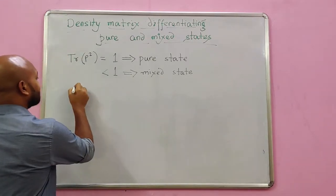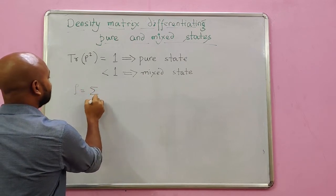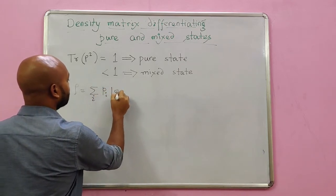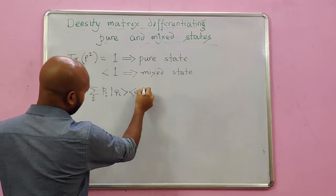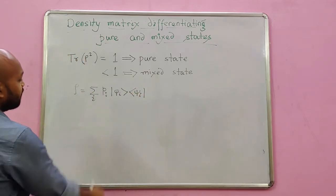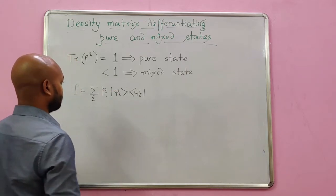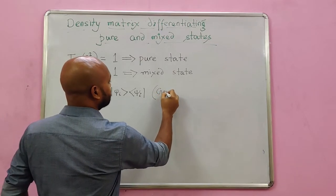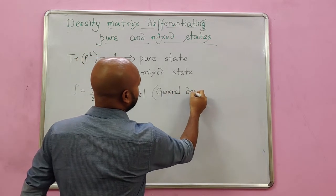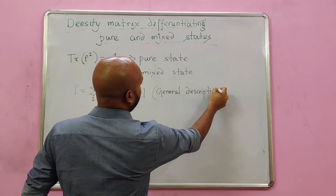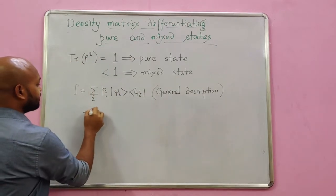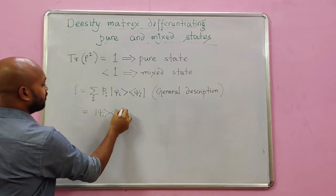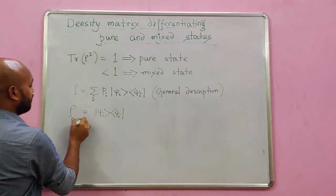Let's first recall that rho, a user density matrix, is given by the following formula: it's equal to summation over i, pi, psi i, psi i. If there is a single component, that means it's a pure state. Single component means there is only one i. So this is a general description, and if it is only psi i, psi i, then it is a pure state.